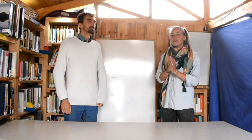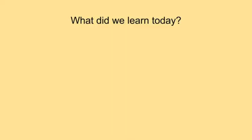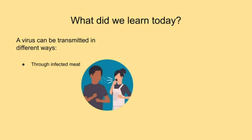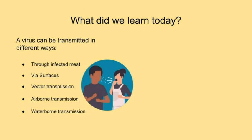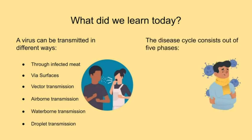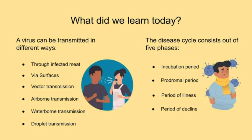So let's see what we learned today. Transmission of viruses can happen in different ways: through infected meat, via surfaces, through vector transmission, airborne transmission, waterborne transmission, and droplet transmission. The disease cycle consists of five phases: the incubation period, the prodromal period, the period of illness, the period of decline, and convalescence.